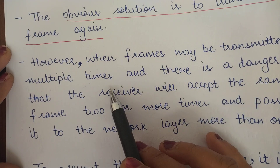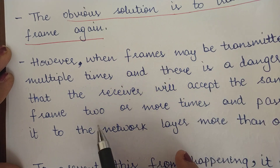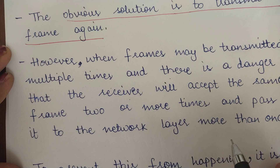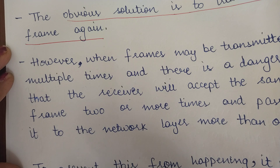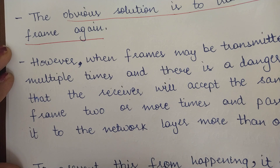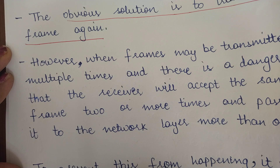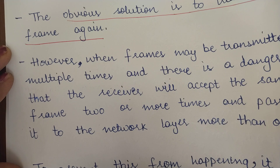However, when frames may be transmitted multiple times, there is a danger that the receiver will accept the same frame two or more times and pass it to the network layer more than once. In the case where the acknowledgement got lost, the receiver had already received the frame successfully but the sender retransmits it. The receiver then receives a duplicate frame and, not knowing it is a duplicate, transmits it to the network layer, resulting in the network layer receiving duplicate frames.